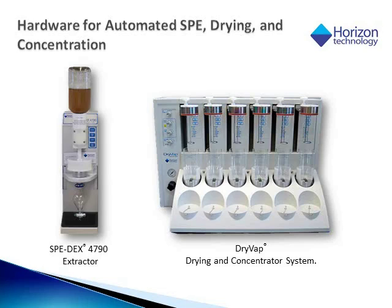Shown on the left is the SpeedEx 4790 disc cartridge extractor, and on the right is the DrVap system. The DrVap system combines membrane sample extract drying and extract concentration down to a 1 milliliter volume automatically. The SpeedEx 4790 processes one sample at a time and can be ganged in groups of up to 8. The DrVap system can handle from 1 to 6 samples independently or in batch mode.